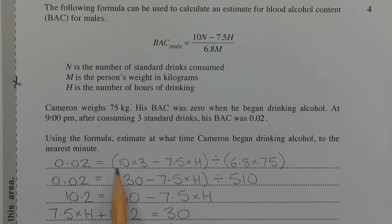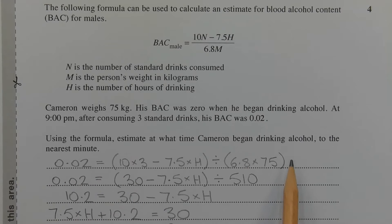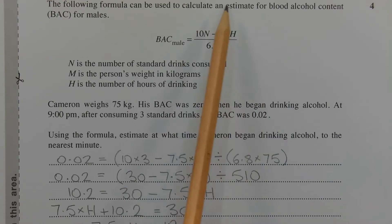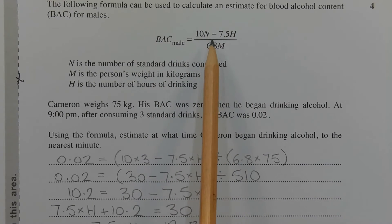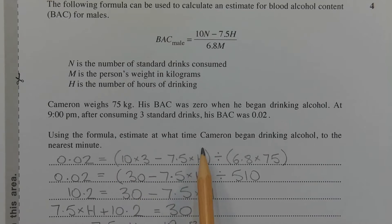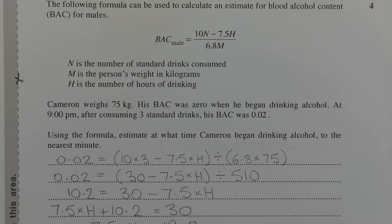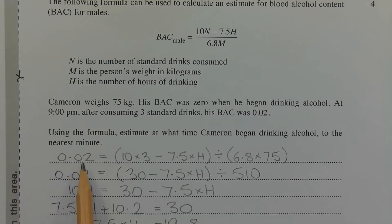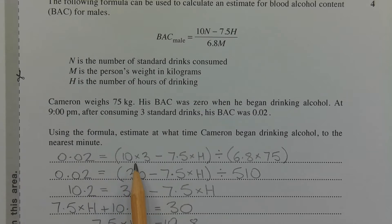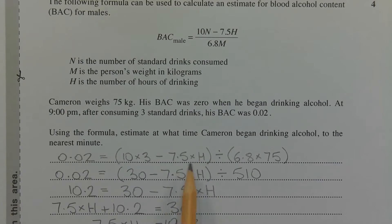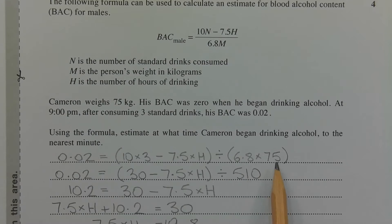Substituting 0.02 for BAC, 3 for N, and 75 for M, we can rewrite the formula using the division symbol. Note that to write an equation originally in fraction form using the division symbol, you must use brackets around the numerator and the denominator, or else you'll get an incorrect answer.